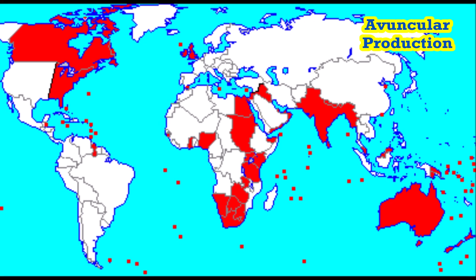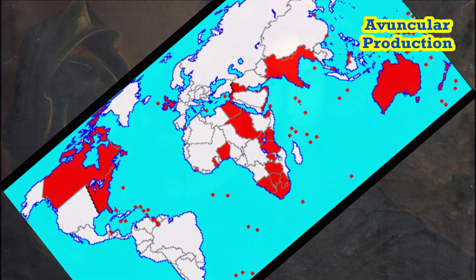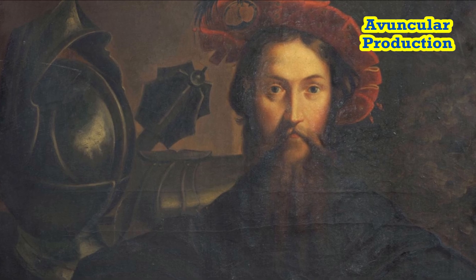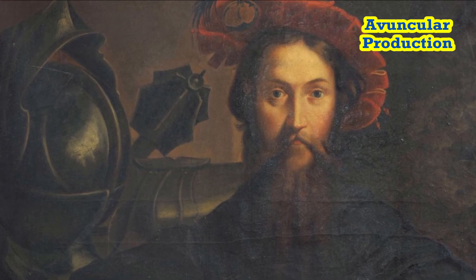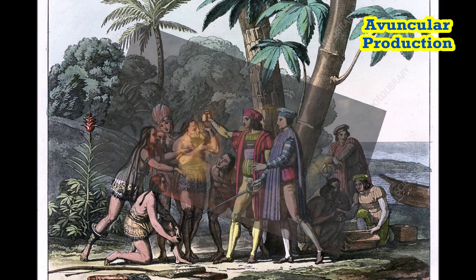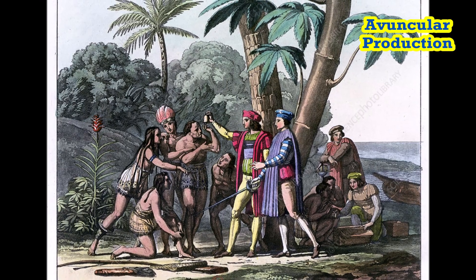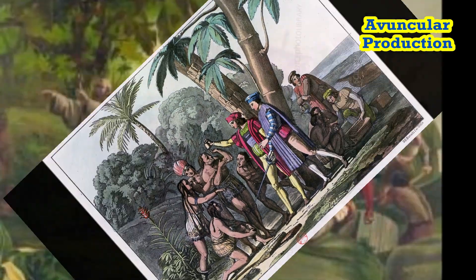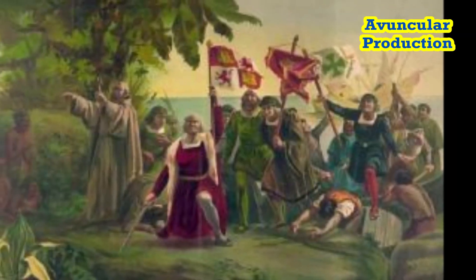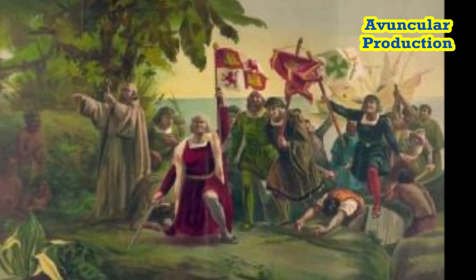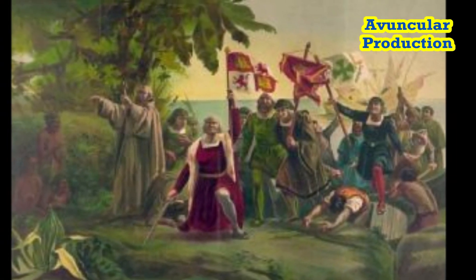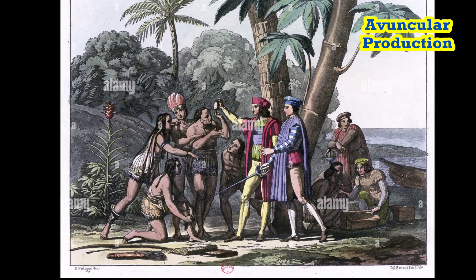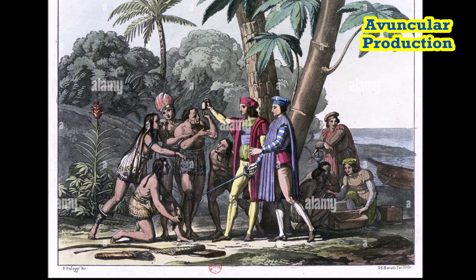8. Martin Van Buren, 1837–1841, Democratic. Faced the Panic of 1837, a major economic depression. 9. William Henry Harrison, 1841, Whig. Died just 31 days into his term, the shortest presidency.